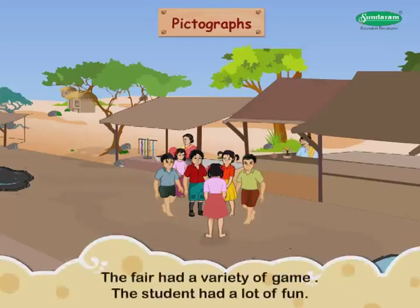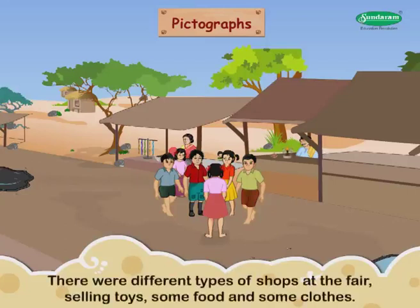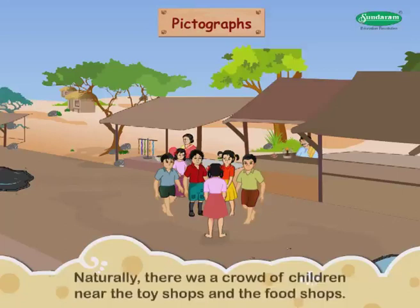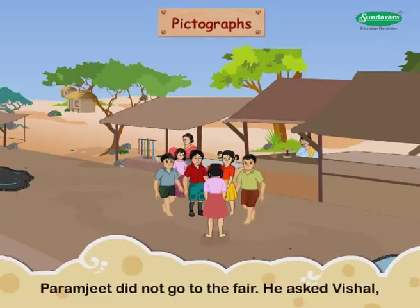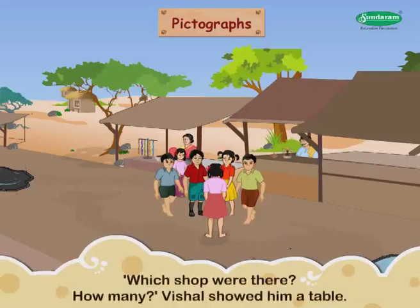The fair had a variety of games. The students had a lot of fun. There were different types of shops at the fair — some selling toys, some food, and some clothes. Naturally, there was a crowd of children near the toy shops and the food shops. Paramji did not go to the fair. He asked Vishal which shops were there and how many. Vishal showed him a table.